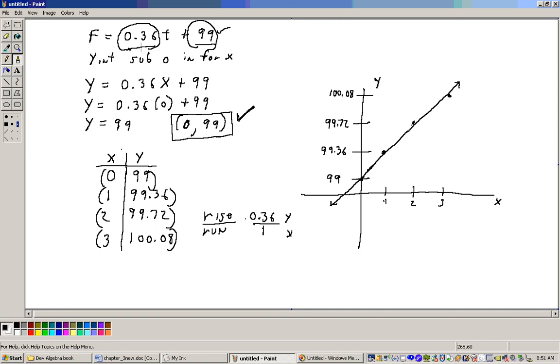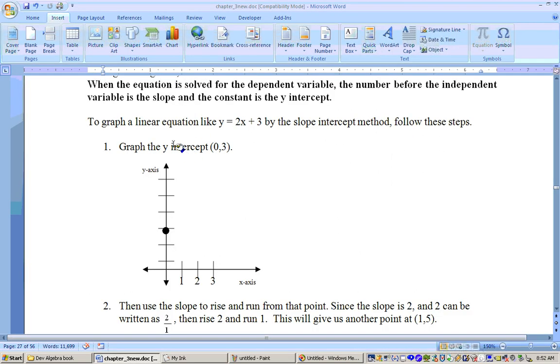Let's go ahead and do another one. For this equation here, it says to graph this equation Y equals 2X plus 3 by the slope-intercept method, follow these steps. First, graph the Y-intercept. See, it's solved for the dependent variable. You have Y equals. You can't do this unless you have the equation solved for Y. Then this will be the Y-intercept. Actually, it's 0, 3. So put a point on the Y-axis at 3.